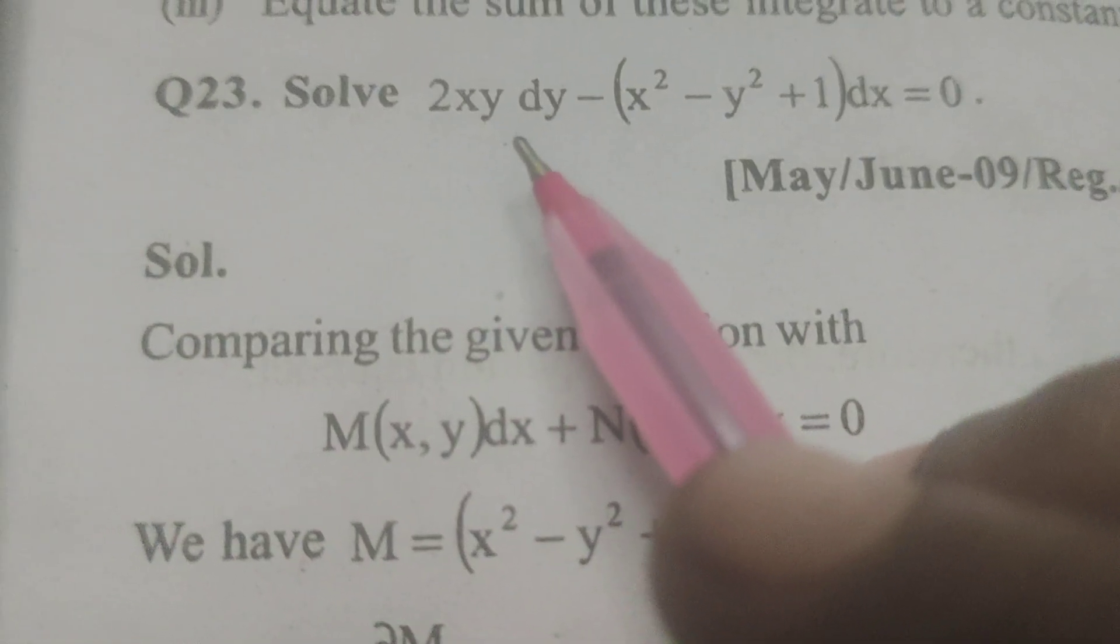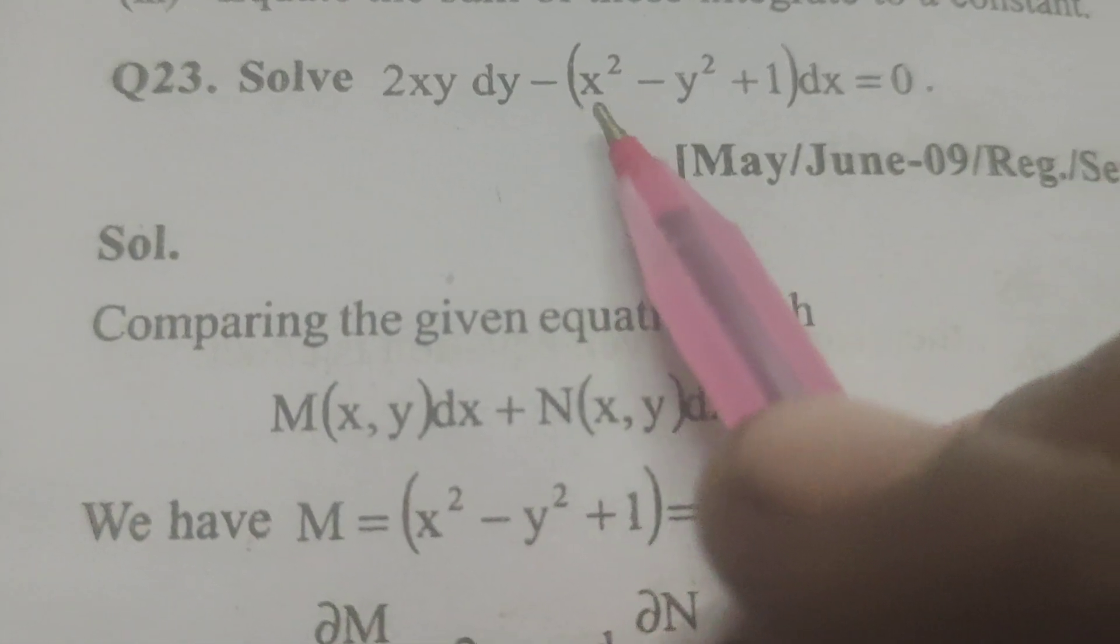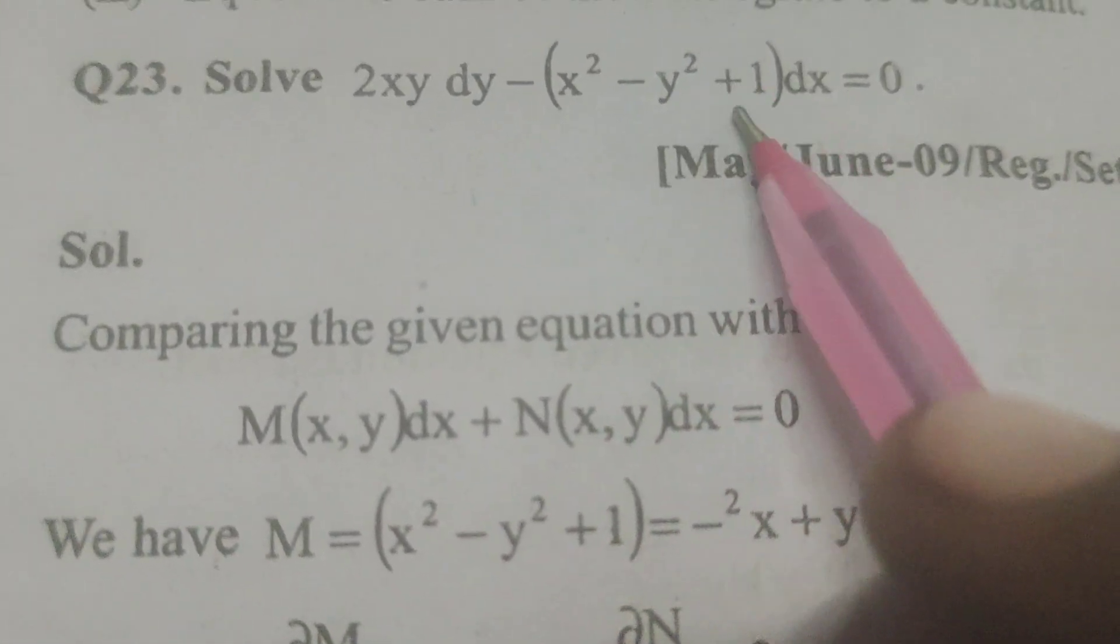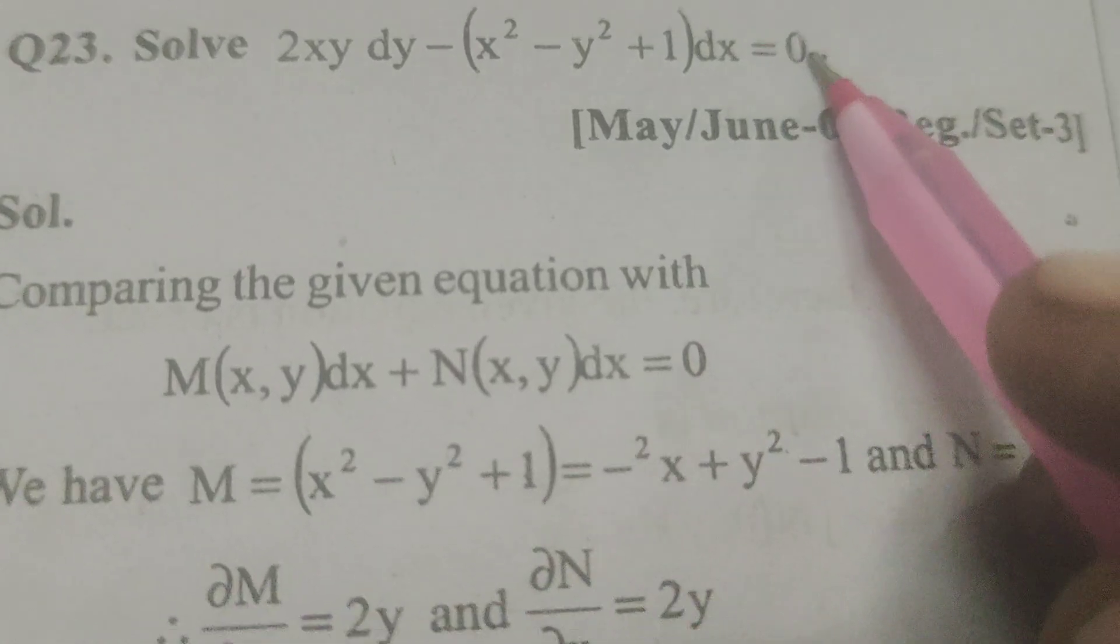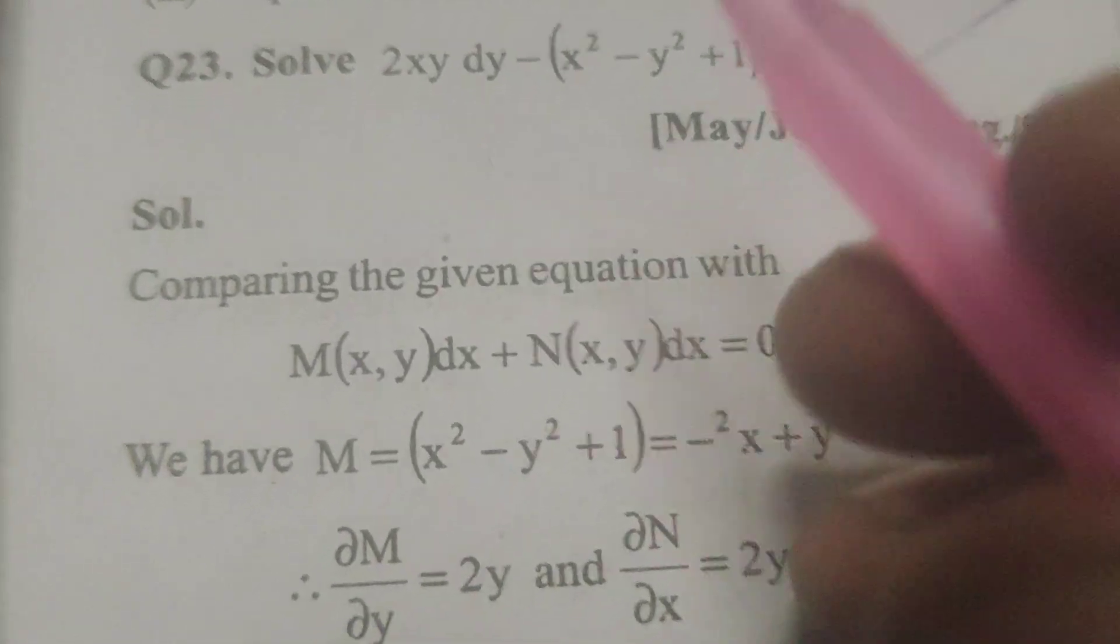Solve this differential equation: 2xy dy minus (x² - y² + 1) dx equals 0.